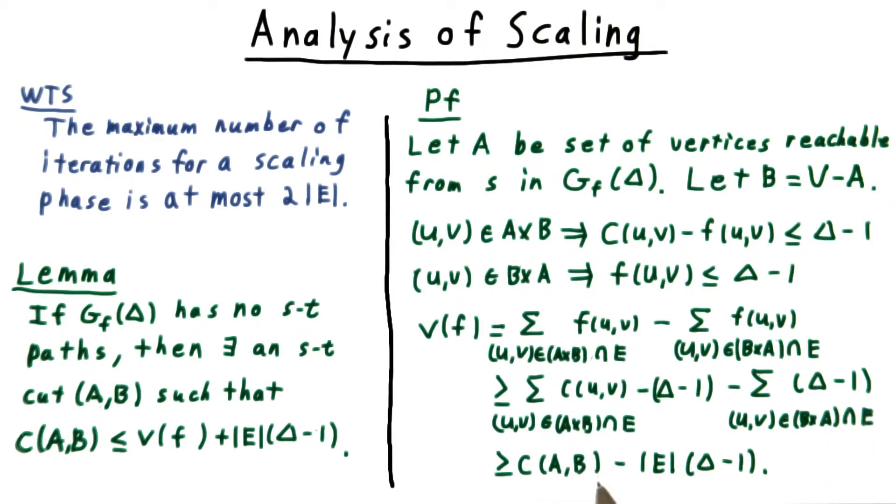This then is just the capacity of the cut. And combining the delta minus 1 terms, that can only appear in E number of terms here. So that gives us the remaining part of the bound.